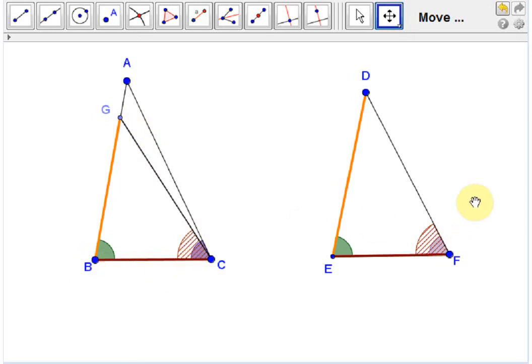Therefore, our initial assumption that AB was not the same length as DE, that assumption that allowed us to construct point G, was incorrect. Therefore, AB is the same length as DE, and the two triangles are in fact congruent by side-angle-side.